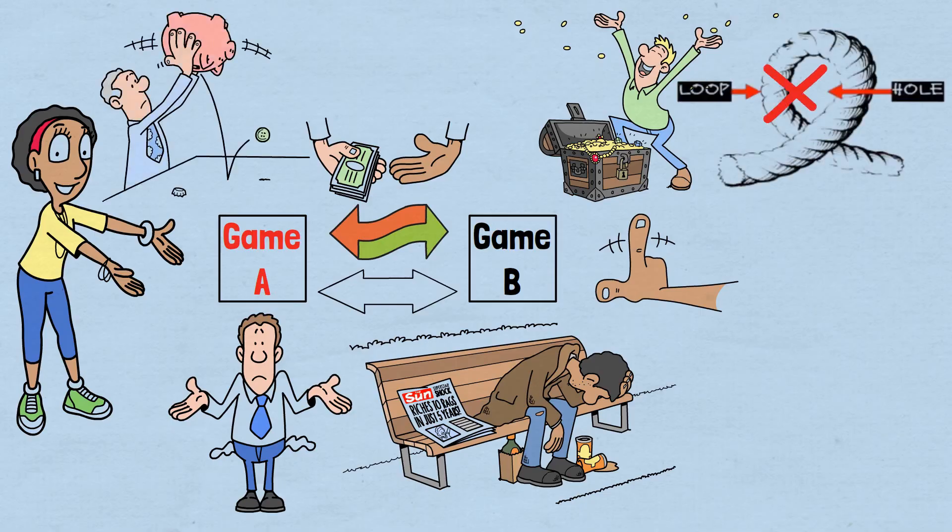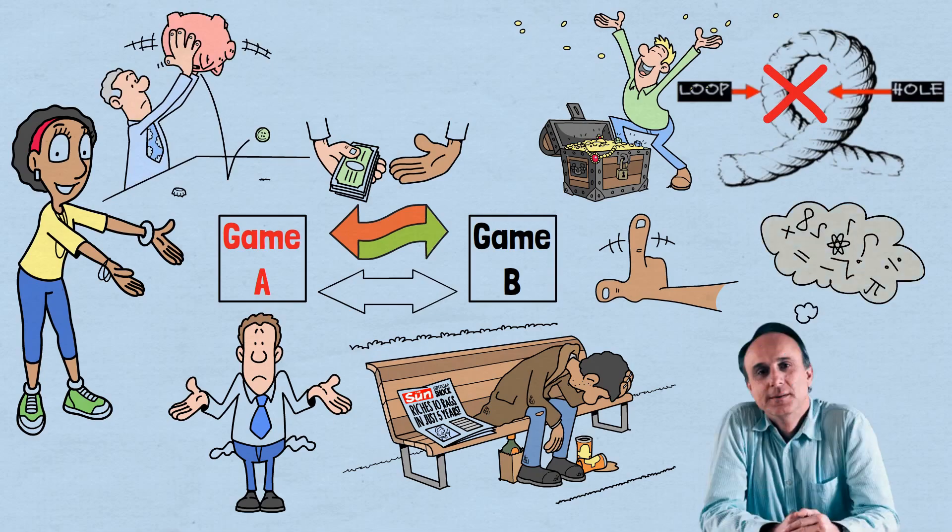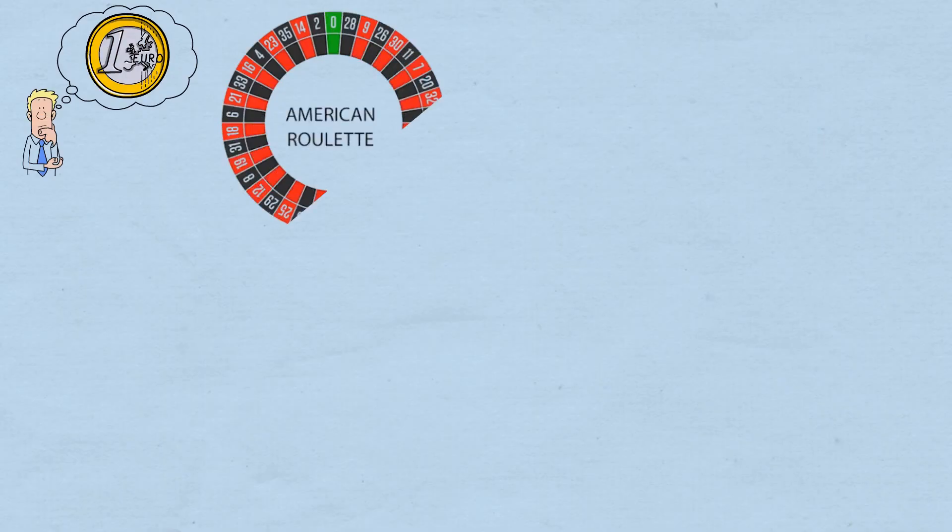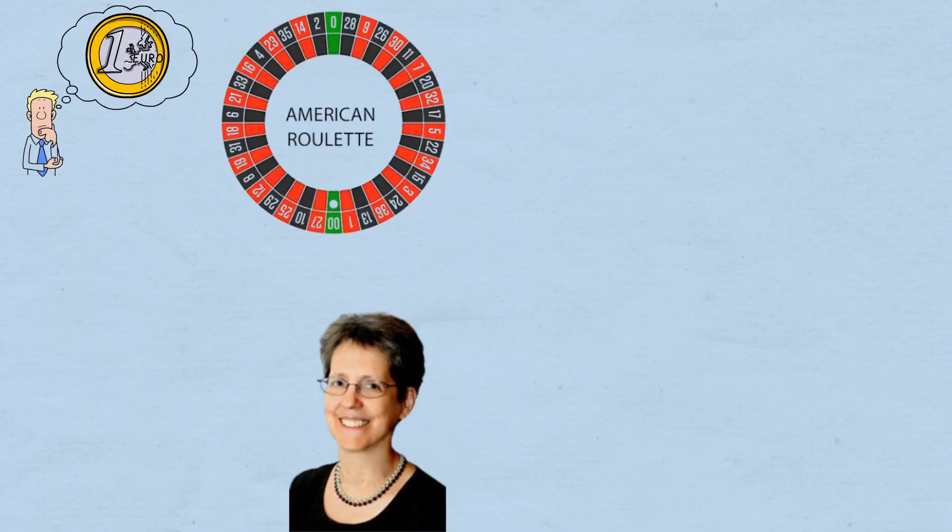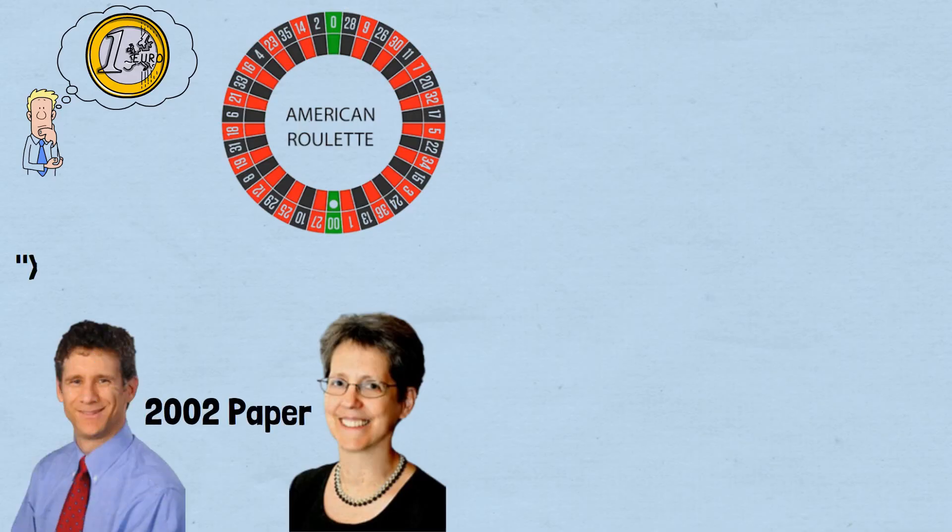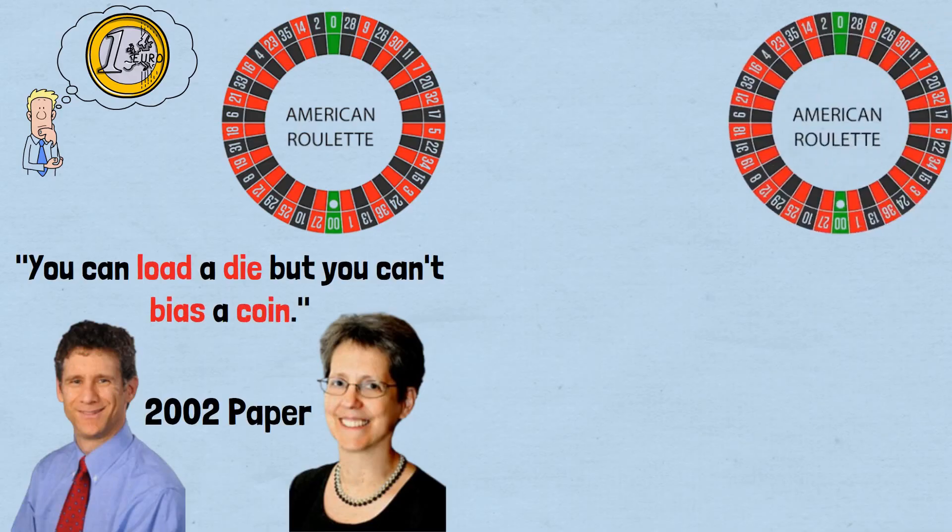It's a mathematical phenomenon discovered by physicist Juan Parrondo. Let's construct our losing games using something more tangible than Parrondo's original biased coins. We'll use American roulette wheels, because as statisticians Andrew Gelman and Deborah Nolan noted in their 2002 paper, you can load a die but you can't bias a coin.